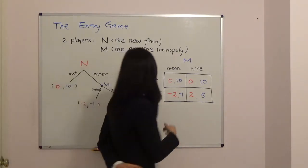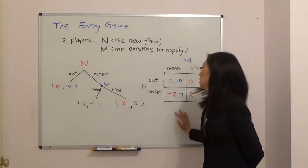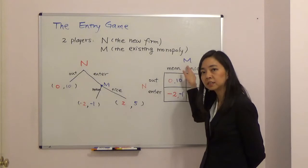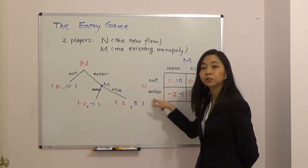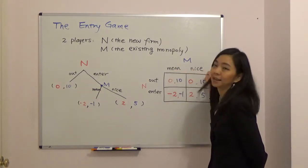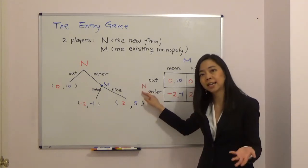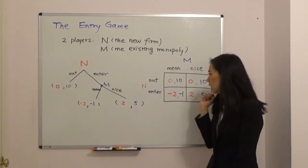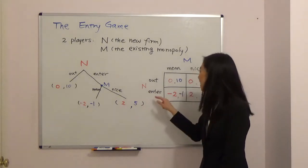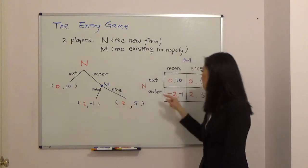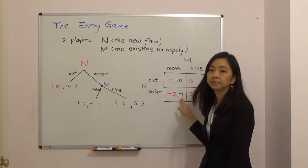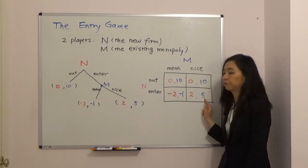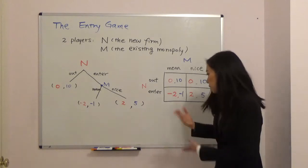We can put this game into a matrix. The new firm is the row player and the existing monopoly is the column player. The new firm can choose to stay out or to enter, and the monopoly can choose to play mean or play nice. If the new firm stays out, the payoff is zero for the new firm and ten for the monopoly. If the new firm enters and the monopoly plays mean, it's negative two and negative one. If the monopoly plays nice, the new firm gets two million and the monopoly gets five million.